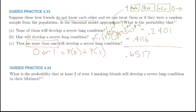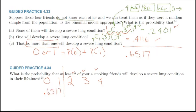What is the probability that at least two of your smoking friends will develop a severe lung condition? That means two, three, or four. Rather than computing those three separately, since we already know P(X≤1) = 0.6517 and all probabilities must sum to one, we compute: 1 − 0.6517 = 0.3483.